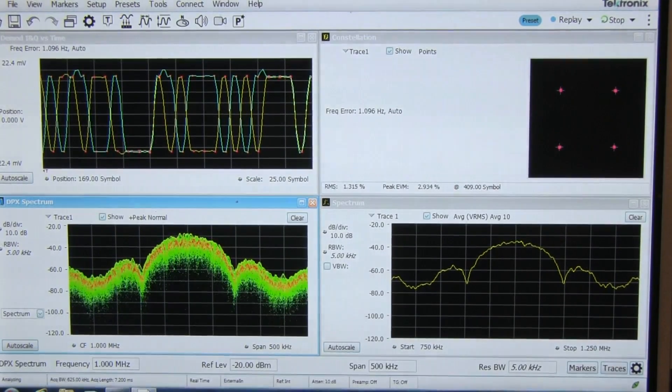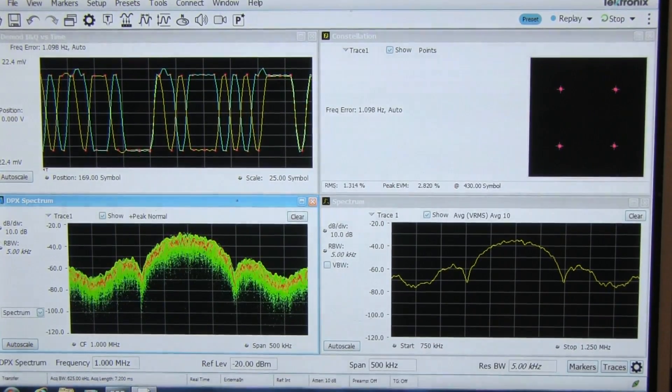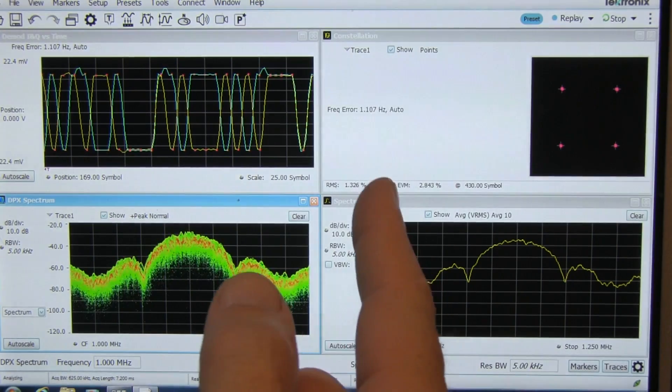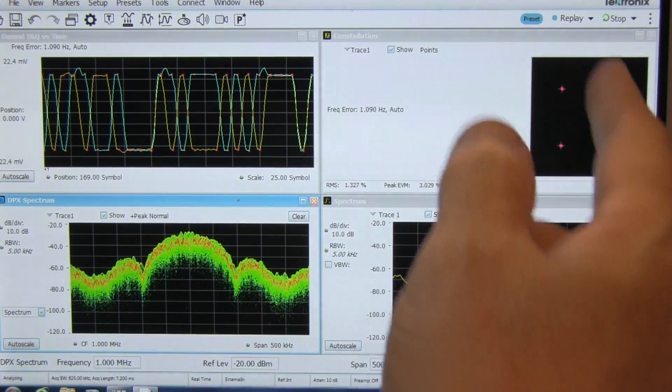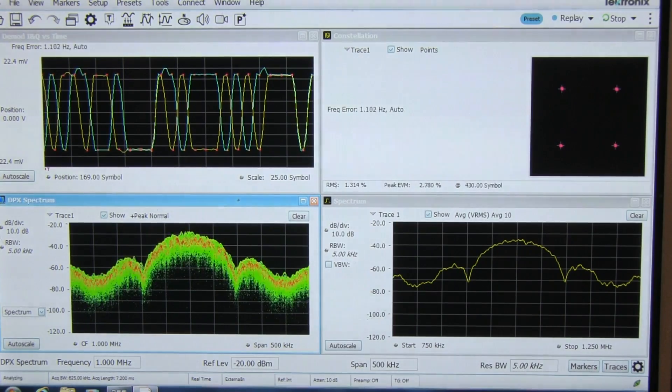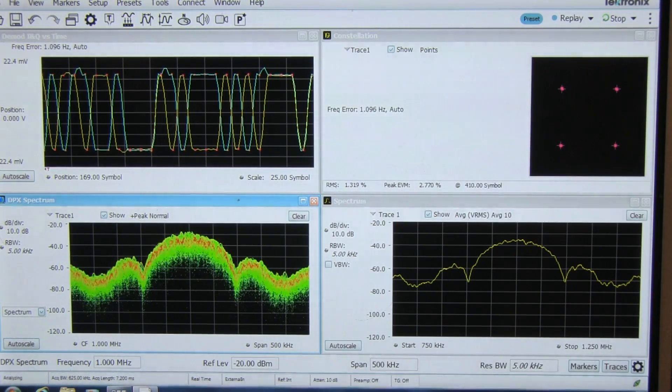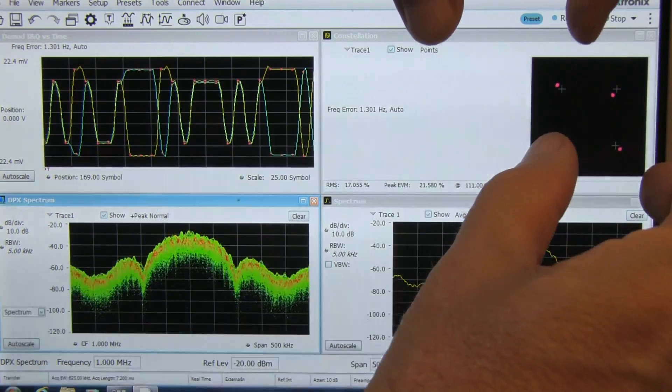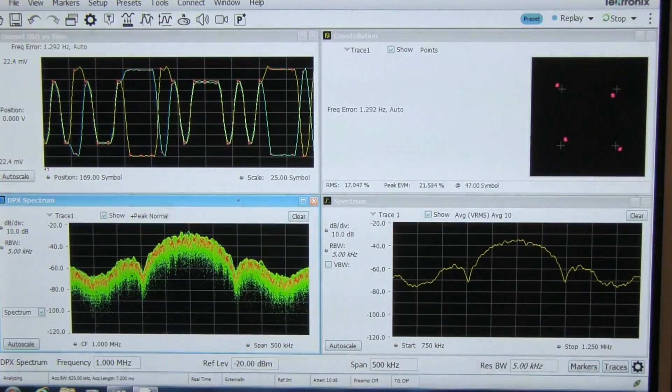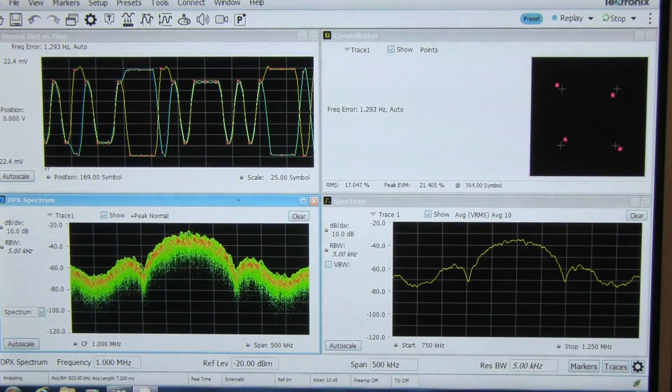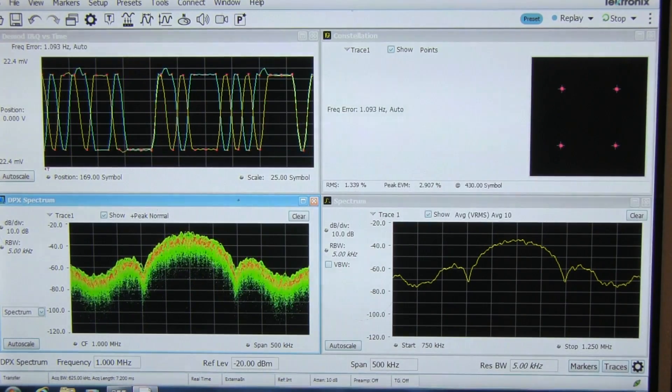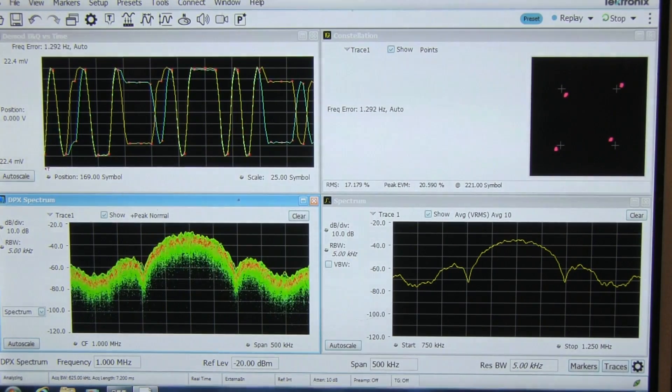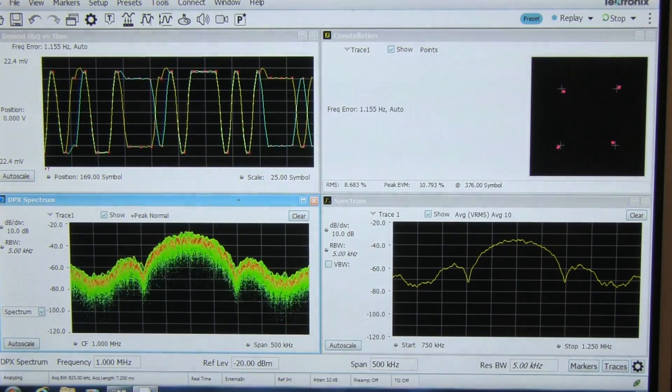Now the last impairment we will take a quick look at is quadrature error, and this is referring to the I and Q sine waves that are going to the two mixers. They are supposed to be exactly 90 degrees apart, and we get a nice perfect constellation when that happens. If there is a phase shift that is not 90 degrees between them, this is what can happen. You can get a skew in almost like a parallelogram effect in the constellation diagram, and that's an indication of quadrature error. Let me reverse it and go in the other direction here. Introducing a phase shift in the wrong direction. So this is what can happen when you've got a phase shift that is not 90 degrees between your quadrature LOs.